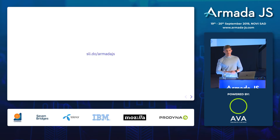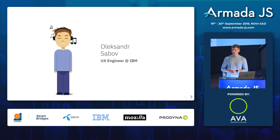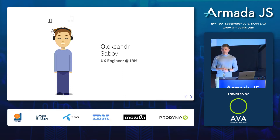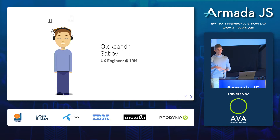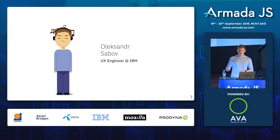Make sure you use this URL to post all your questions. I'll answer them after the talk. My name is Oksanu Savov. I'm a UX engineer at IBM. UX engineer means basically a front-end developer with design background and design skills. I do a lot of prototyping, animations, and motion design.